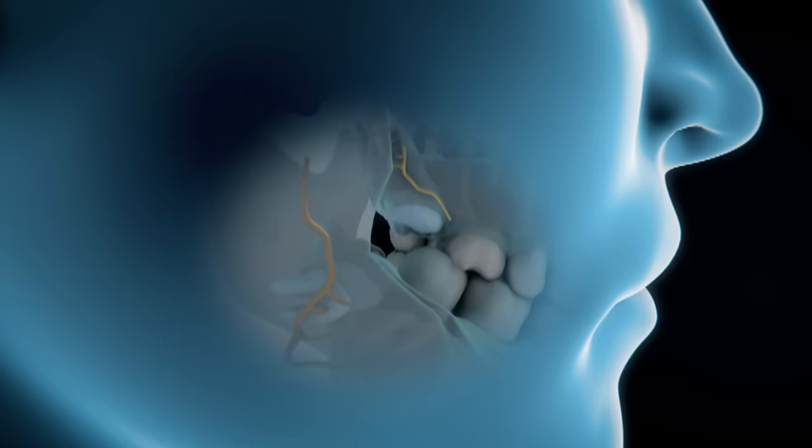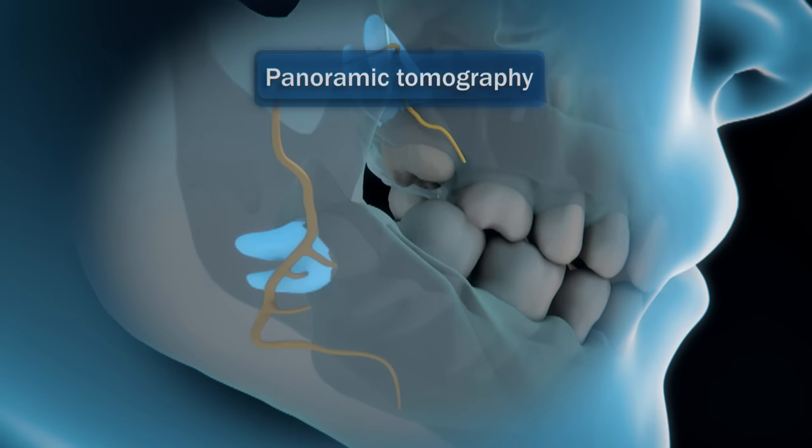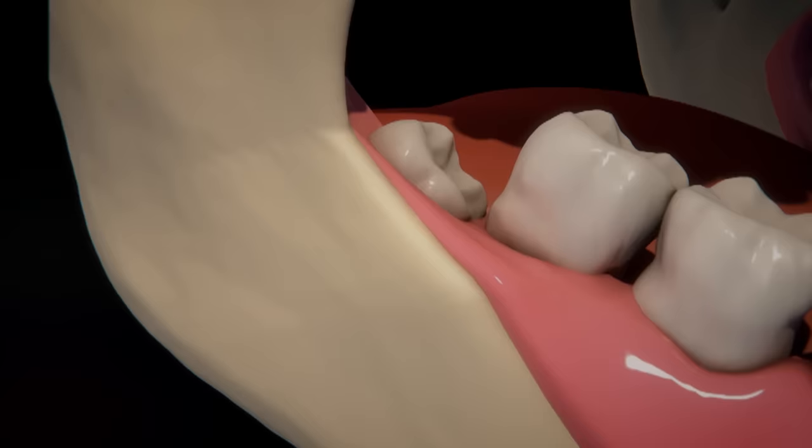If one or more wisdom teeth cause problems, the specialist will send the patient for a panoramic, periapical, or tomography x-ray to see the proximity to the nerve, size and arrangement of the roots before proceeding with the extraction.